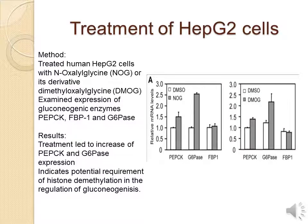In the treatment of HepG2 cells, histone demethylases are classified into two groups. The first group contains two genes, LSD1 and LSD2; these enzymes catalyze demethylation via an FAD-dependent oxidative reaction. The second group contains a JMJC domain; these enzymes use Fe2+ and the intermediate metabolite alpha-ketoglutarate as cofactors to catalyze a hydroxylation-based demethylation.